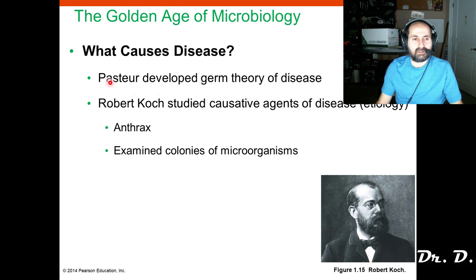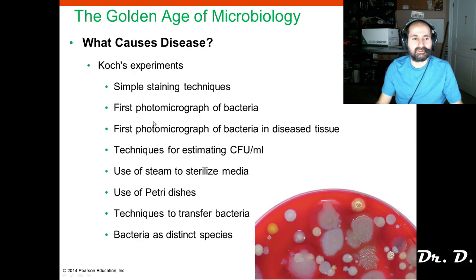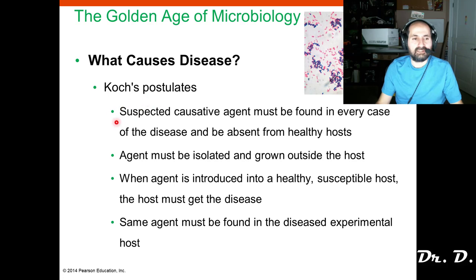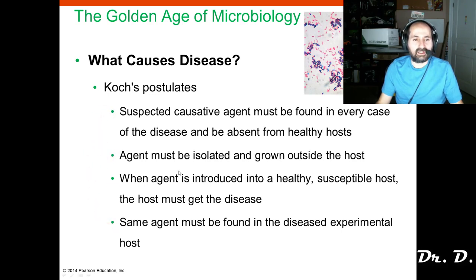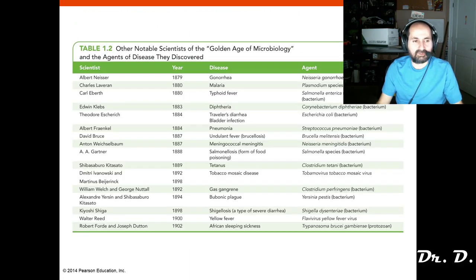We talked about germ theory — Pasteur developed germ theory. Robert Koch's big contribution was showing how anthrax is caused by a bacteria called Bacillus anthracis. He developed many techniques in the lab, and he developed four postulates. By following these four postulates he was able to link a particular microorganism — namely bacteria — to a particular disease. You should know these four postulates for the exam because they showed how a particular bacteria causes a particular disease.